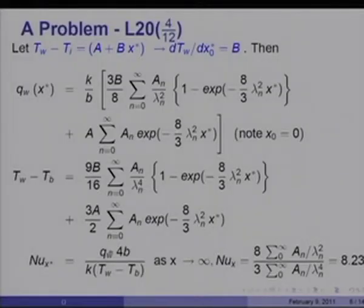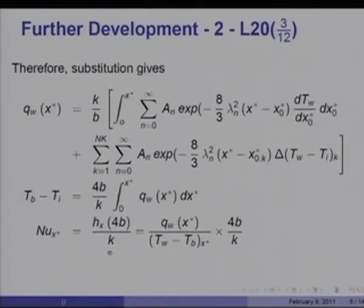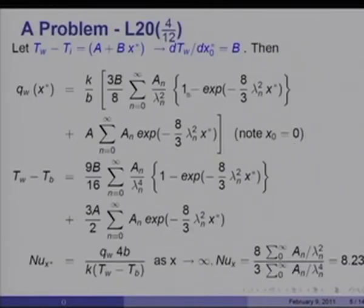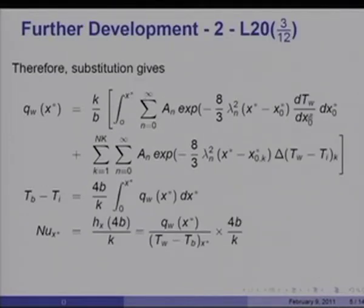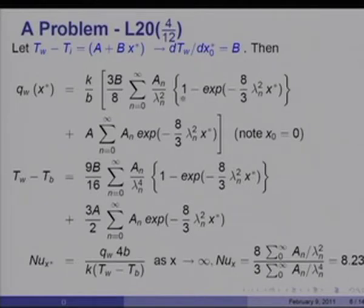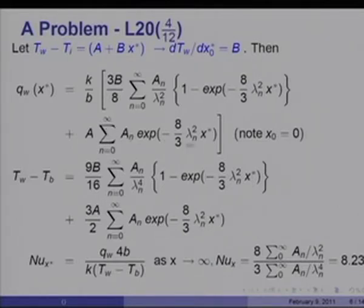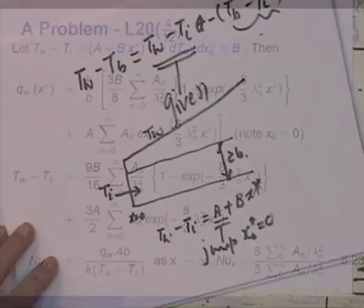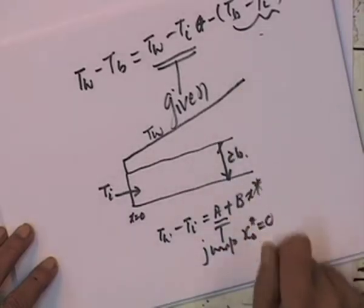If I substitute this variation of T_w minus T_i in the previous expression, then dT_w/dx_naught* is simply the constant B. Since B is a constant, it comes out of the integral, and integrating from x_naught equal to 0 gives a_n/λ_n² times (1 minus exp(−(8/3)λ_n² x*)). Of course, we must add the step jump at x_naught equal to 0, which is the entrance, giving plus A times the sum from n=0 to infinity of a_n exp(−(8/3)λ_n² x*). There are no other step jumps, so it is a simple case.